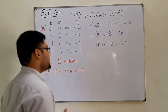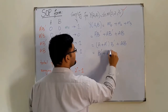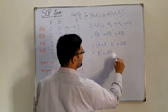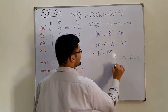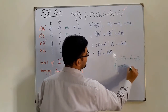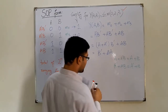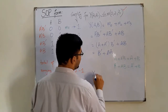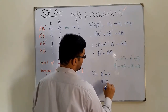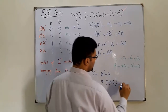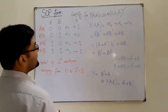A + A' = 1, so that term becomes B'. Therefore Y = B' + AB. Using the Boolean property A' + A·B = A' + B (with B' playing the role of A' and A playing the role of B): Y = B' + A. So the minimal SOP form is Y(A,B) = A + B'.